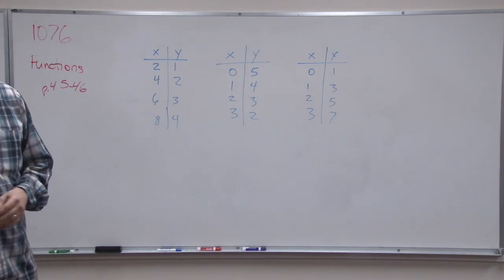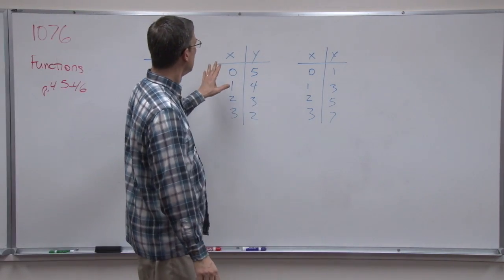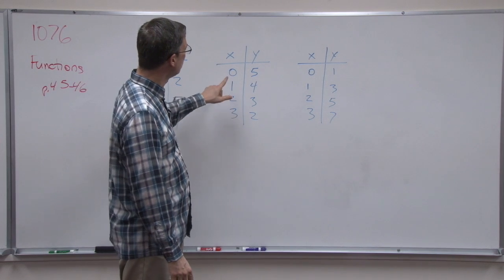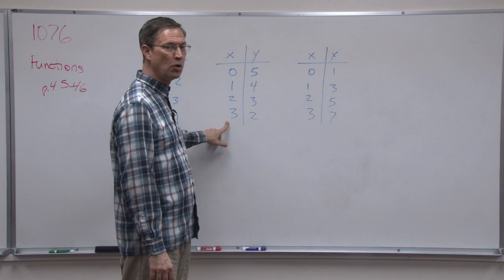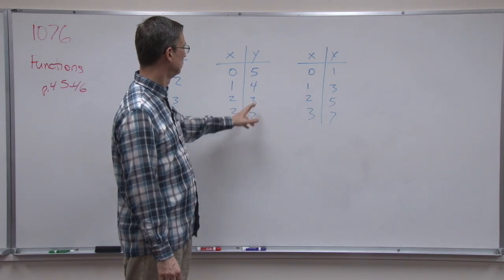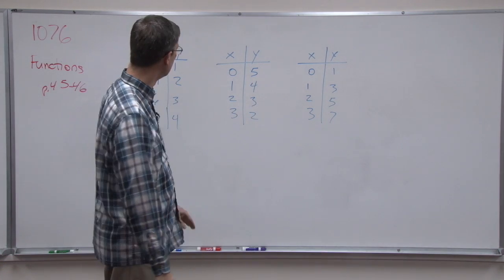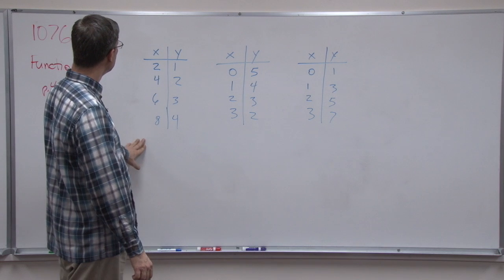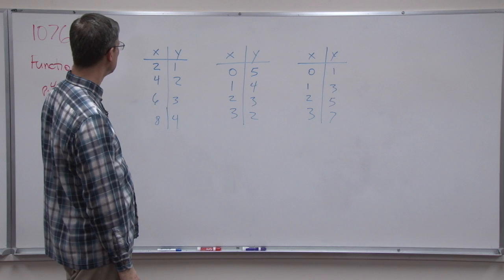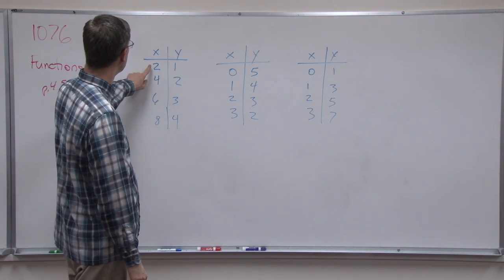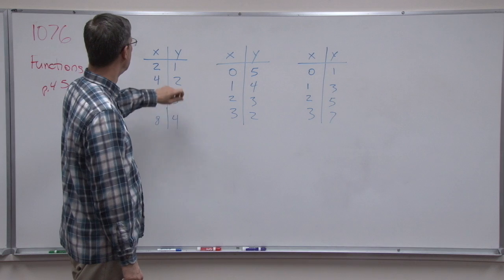And all we have to know is that if we have an equation and we plug in these values for x, we should be able to solve and get a corresponding y value for each of those. So I'm looking at this first one and trying to think, do I see some kind of a pattern between these? Like if I plug in 2, what would I have to do to 2 to get 1?